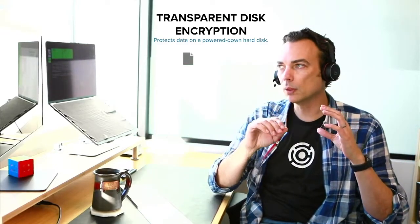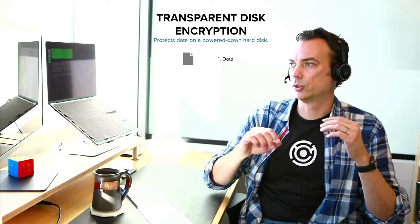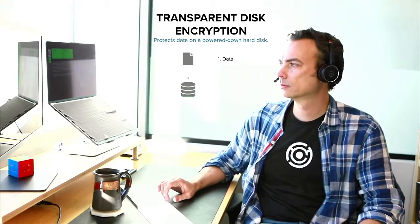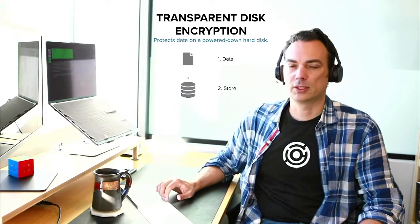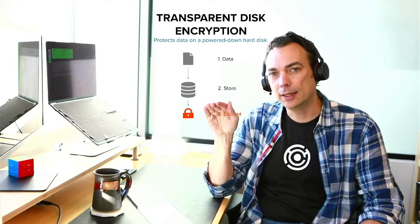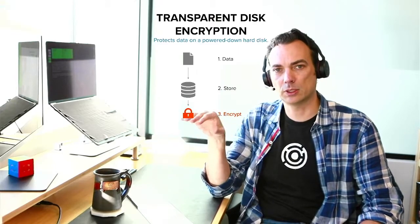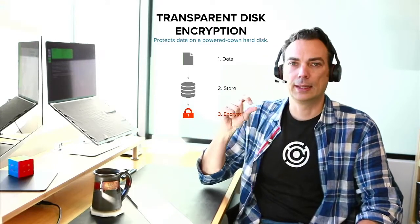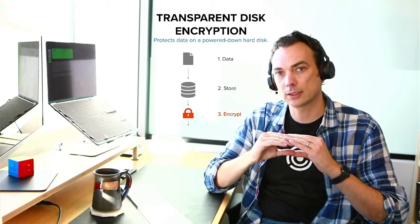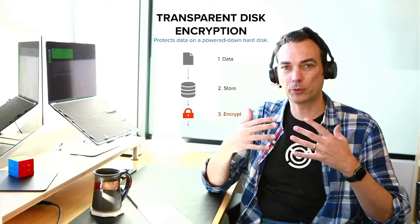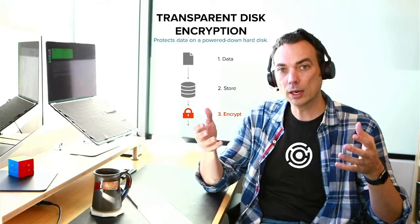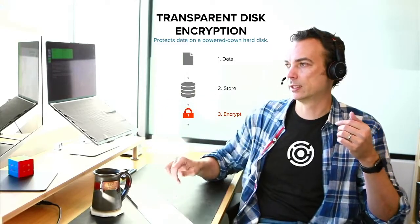Here's how that works. You start with your data, and when you go to store it — say in a database or on a disk — it goes to that place. Then at the lower levels, usually of the operating system, sometimes of your database software, that's when the encryption happens. And then it actually gets to the disk itself. So on the disk it's encrypted, but at the operating system level, at the user level of anyone on a running system, effectively it's not encrypted at all.